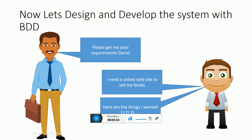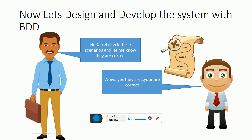Darrell goes back and tells Jake his ideas. Jake gets the requirements and Darrell lists what he wants from the online bookstore. Jake then designs the system using Given-When-Then scenarios, which is called Gherkin language. Jake shows it to Darrell — the statements are very easy, English-like — and Darrell understands what Jake has understood. They come to a common understanding.